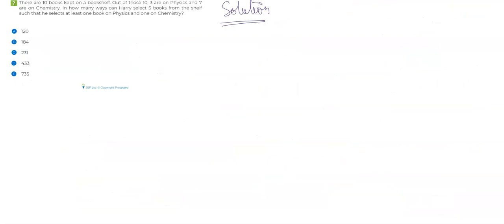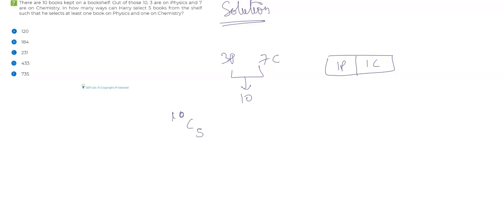Another way to solve this question is to think in this way. You have 3 physics and 7 chemistry books — total 10 books — and you need at least one of each type. Sometimes, instead of writing down all the favorable cases as in the previous method, the quicker way is to find all the ways of selecting five books from 10, which is 10C5, and then eliminate the cases you don't want. One scenario you don't want is when you choose all 5 chemistry books and 0 physics books. If you choose 5 chemistry out of 7, that's 7C5 ways — this is one case to remove.